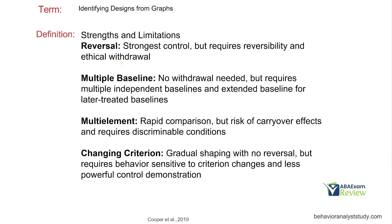Strengths and limitations: Reversal — strong experimental control, but requires reversibility and ethical withdrawal. Multiple baseline — no withdrawal needed, but requires multiple independent baselines and extended baseline for later treated baselines. Multi-element — rapid comparison, but risk of carryover effects and requires discriminable conditions. Changing criterion — allows gradual shaping with no reversal needed, but behavior has to be sensitive to criterion changes, the behavior has to already exist, and it's hard to demonstrate control.